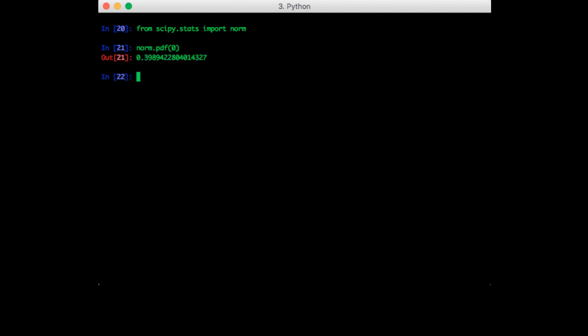Of course, you might be working with a Gaussian that has a mean other than 0 and a variance other than 1, so you can pass in those arguments into the PDF function as well. So norm.pdf, x equals 0, mean equals 5, and standard deviation equals 10.